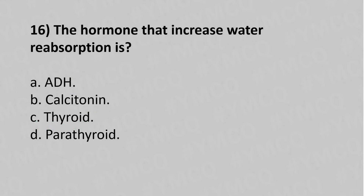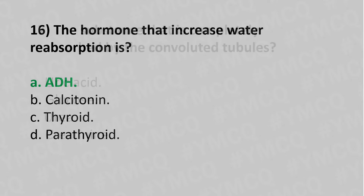Now let's move to question number sixteen: The hormone that increases water reabsorption is which of the following? Option A: ADH. Option B: calcitonin. Option C: thyroid. Option D: parathyroid. The answer is Option A: ADH, or antidiuretic hormone.